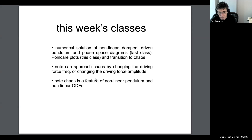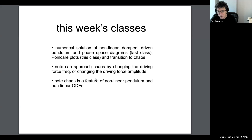In this week's classes we've been looking at the emergence of chaotic behavior out of periodic behavior for the nonlinear damped driven pendulum. In the first class this week we looked at the emergence of chaos through the eyes of phase space diagrams. In this class we're going to look at the emergence of chaos through the eyes of Poincaré section plots. Both of these give us a way of visualizing and understanding that transition from periodicity to chaotic behavior. There are two ways we can approach chaos in the damped driven pendulum.